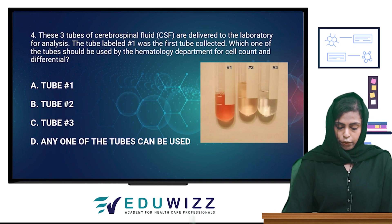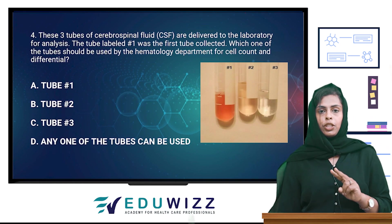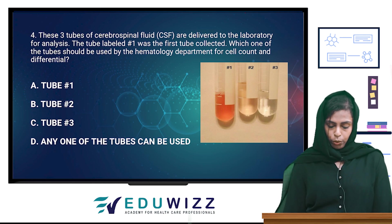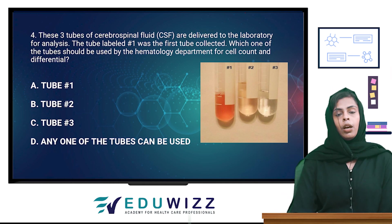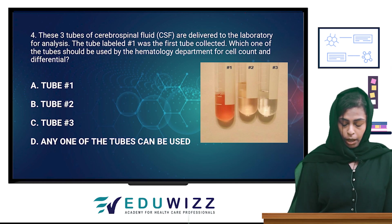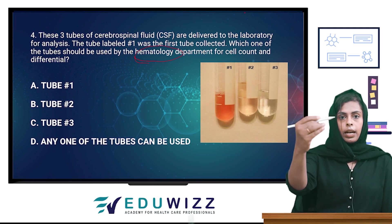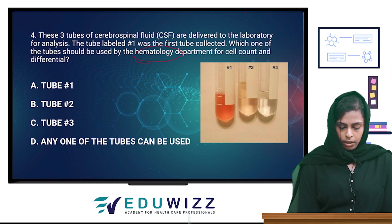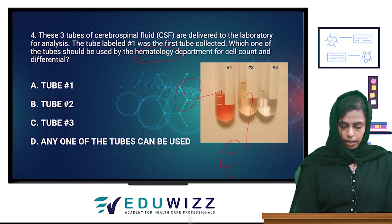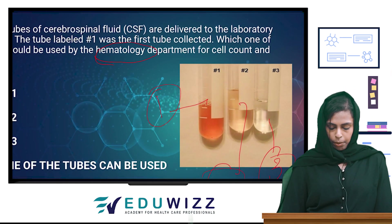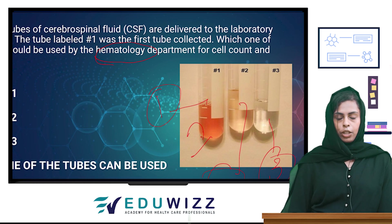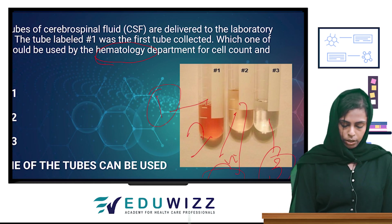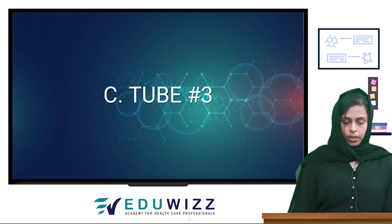Three tubes of cerebrospinal fluid are delivered to the laboratory for analysis. The tube labeled one was the first tube collected. Which tube should be used by the hematology department for the cell count and differential? We have tube 1, tube 2, and tube 3. Tube 1 appears hemorrhagic, tube 2 is likely hemorrhagic, and tube 3 is clear. The answer is tube 3.